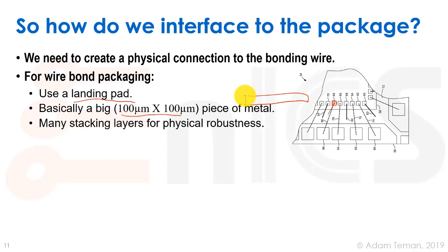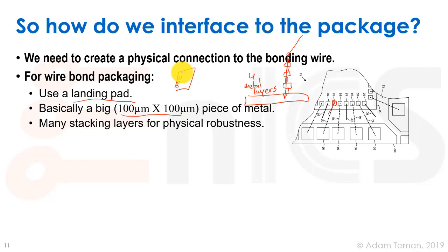If we take a cross-section of our chip, we have contacts and metals stacked up. What we're going to do is put big stacks of these contacts and metals so that when the actual sewing-machine-type pin comes and bonds the wire, it doesn't just push through and break the chip. Usually we'll have at least about four metal layers on top of each other. This bonding pad will be given to you by the package house or foundry as a GDS — it's just a big piece of metal with an array of vias underneath it, and then another piece of metal down, and so on.